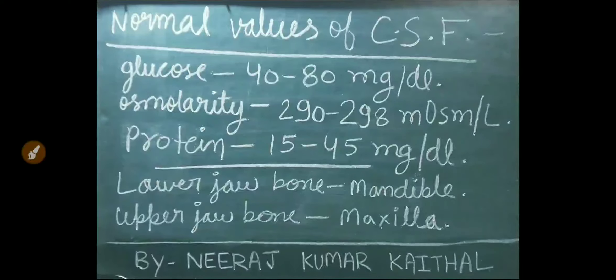Normal values of CSF: glucose 40 to 80 mg per dl; osmolarity 290 to 298 mOsm per litre; protein 15 to 45 mg per dl.